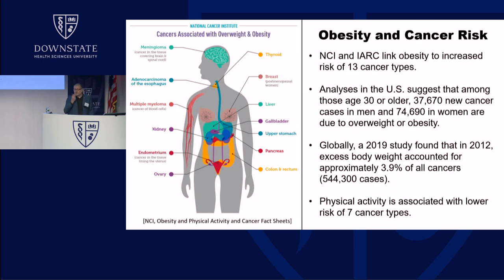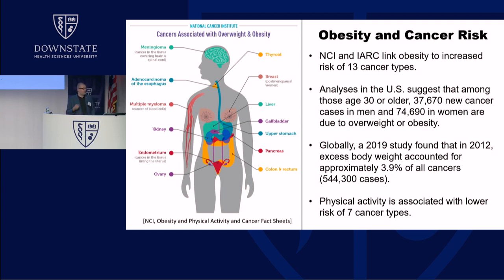Obesity is important for cancer for several reasons. IARC and NCI have linked obesity causally to increased risk for 13 cancers. Analyses of the attributable risk suggest that amongst those who are 30 years or older, annually we see roughly 37,000 new cancers in men and 74,000 new cancers in women that can be attributed to overweight or obesity. On the global stage, it's been estimated that about 3.9% of all cancers globally can be attributed to overweight or obesity.